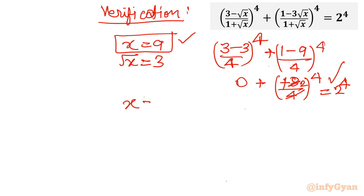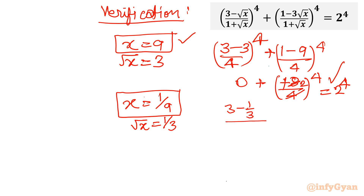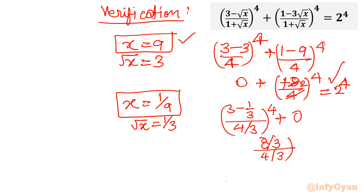Now for the second value x equal to 1 over 9: root x equals 1 over 3. The first term: 3 minus 1/3 equals 8/3, divided by (1 plus 1/3)^4 which is (4/3)^4. The second term: 3 times 1/3 equals 1, so 1 minus 1 equals 0, making the second term 0. So we have (8/3) over (4/3) whole power 4, which simplifies to 2^4. This equals the RHS, hence verified.